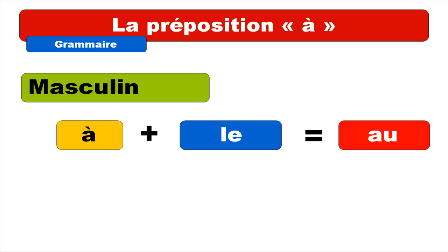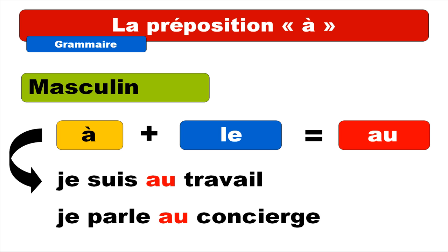It's becoming a bit more tricky when we get the masculine form. So if you combine A — the preposition A — and then the article défini LE, you will get AU. So let's have two examples. Je suis au travail. So as you can see I'm making the liaison. Je suis au travail. Repeat. And then the second one: je parle au concierge. Repeat: je parle au concierge.